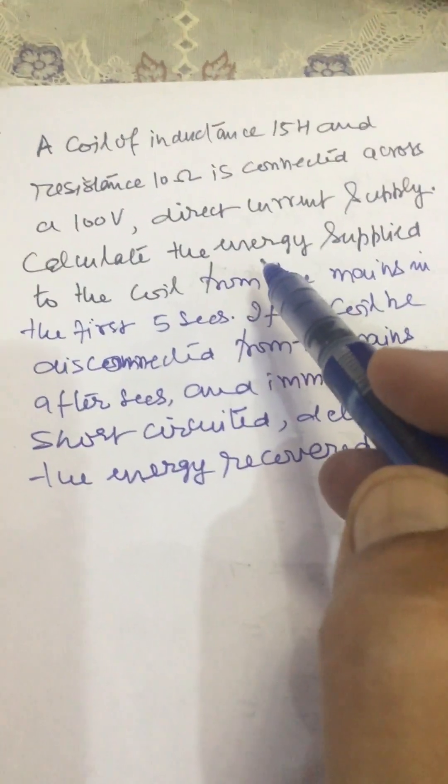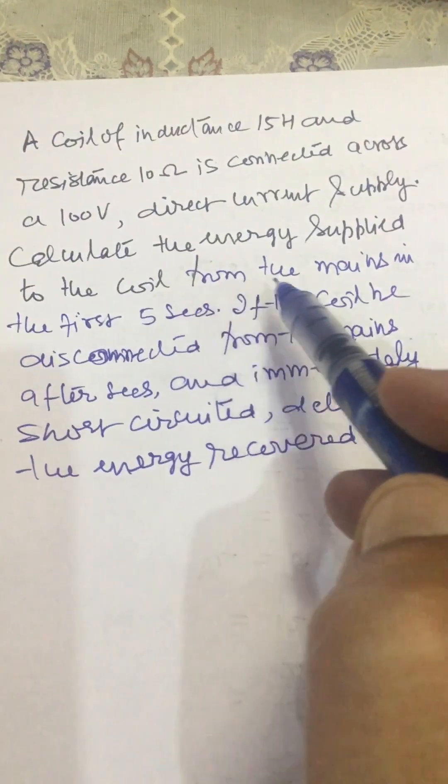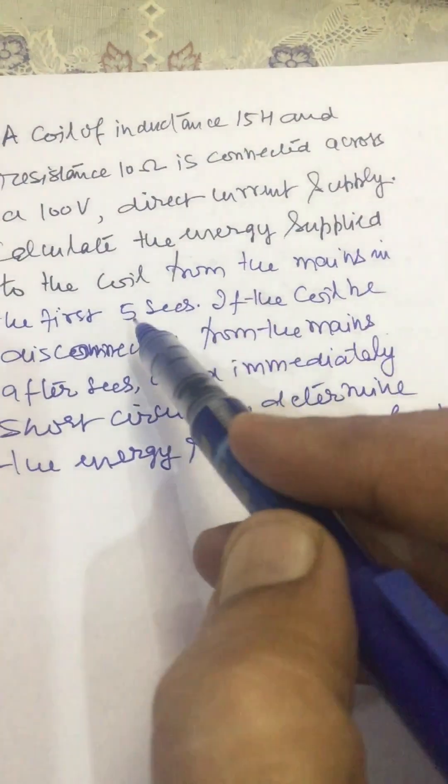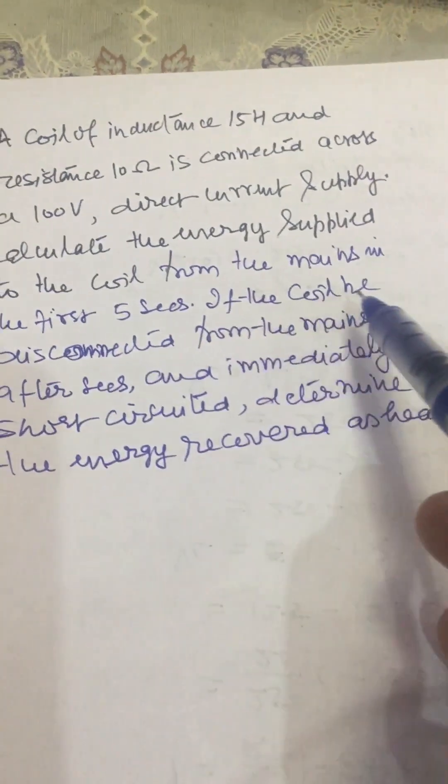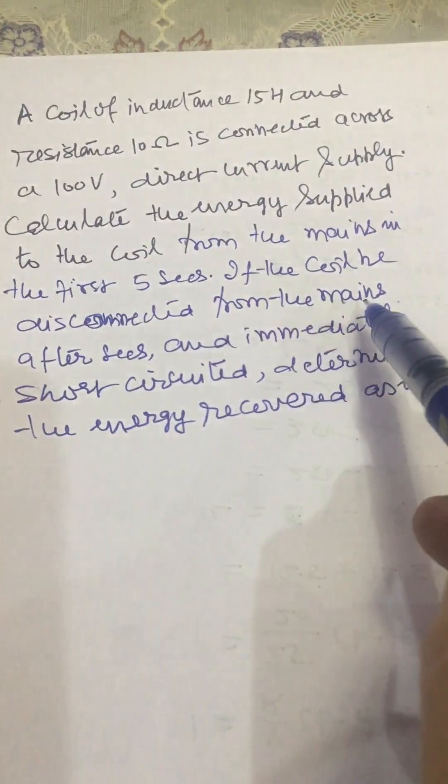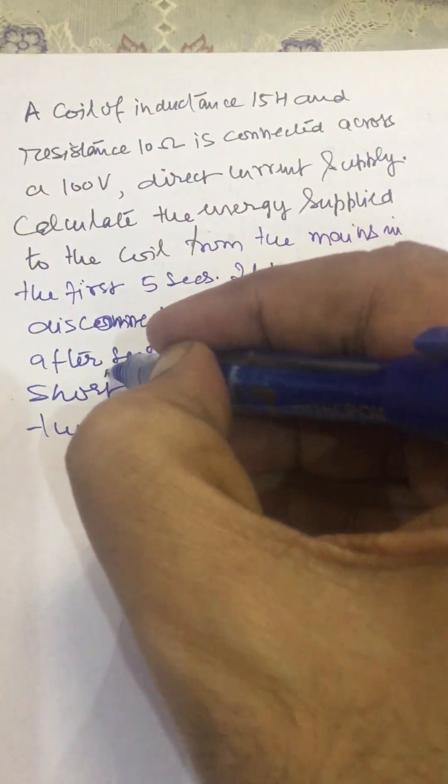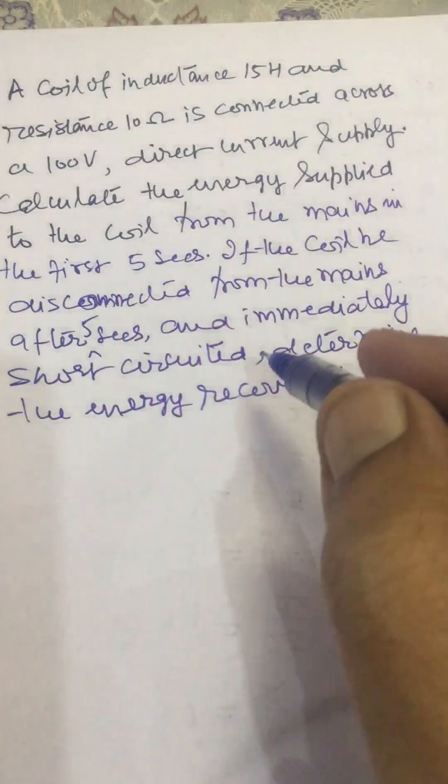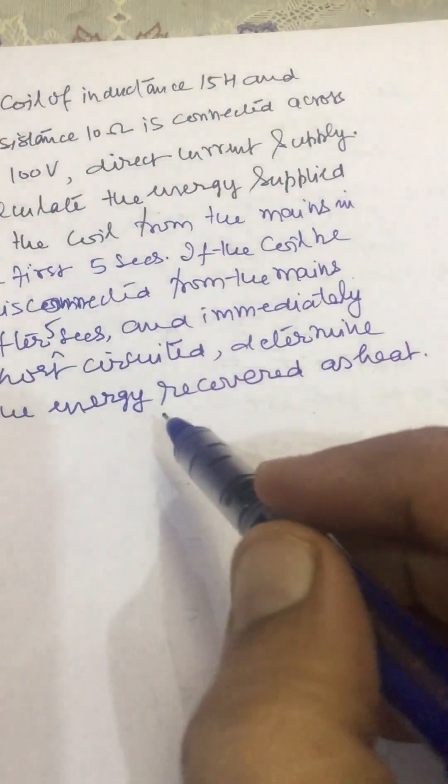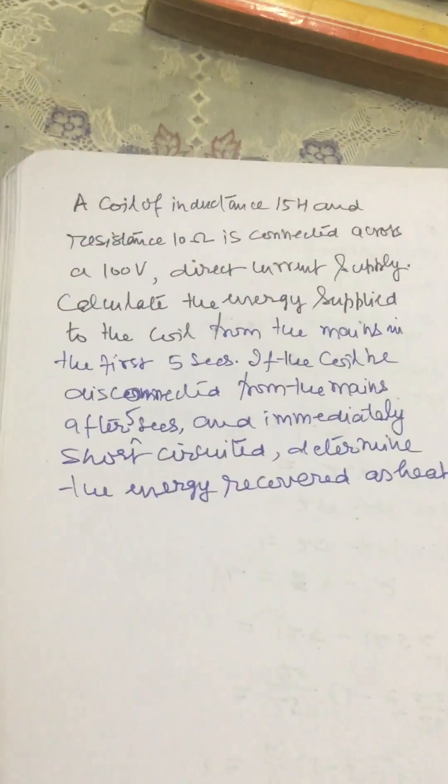Calculate the energy supplied to the coil from the mains in the first 5 seconds. The coil is disconnected from the mains after 5 seconds and immediately short-circuited. Determine the energy recovered as heat.